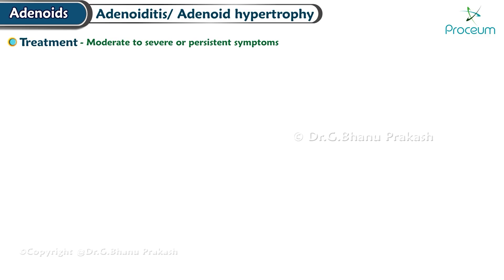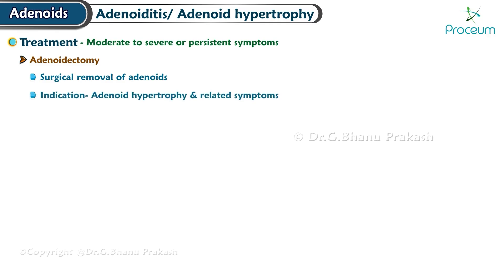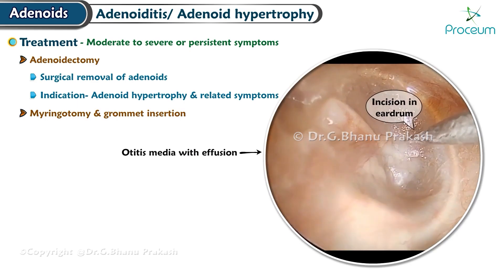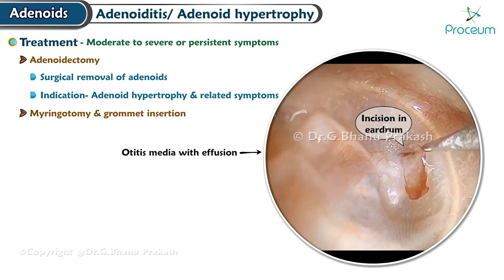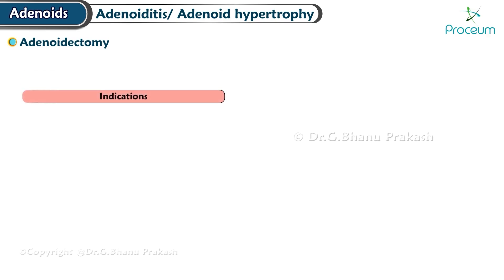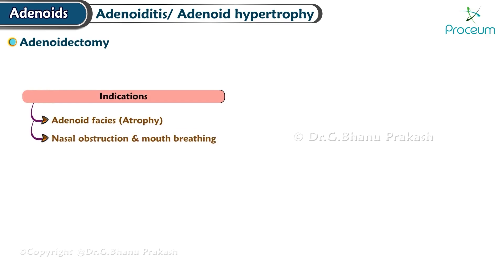For moderate to severe or persistent symptoms, the following interventions may be considered. Adenoidectomy — surgical removal of the adenoids — is often recommended in cases of significant adenoid hypertrophy. In situations where otitis media with effusion is present, additional procedures such as myringotomy (incision in the eardrum) and grommet insertion (placement of small tubes in the eardrums) may be necessary to facilitate drainage and alleviate associated symptoms.